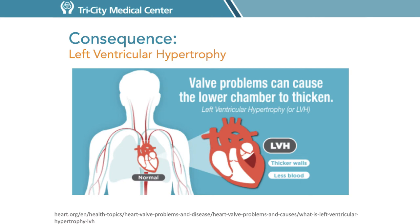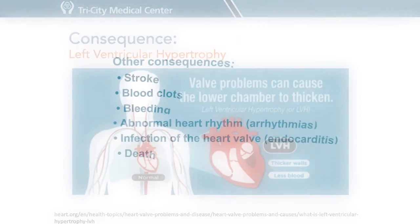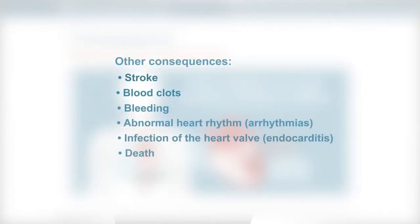Other potential consequences of left ventricular hypertrophy or aortic stenosis include an increased risk for stroke, blood clots, bleeding, abnormal heart rhythms such as arrhythmias, and a predisposition for infection of the heart valves called endocarditis, and potentially death.